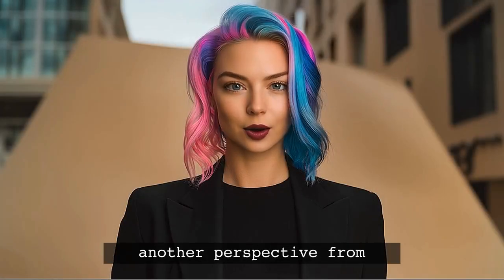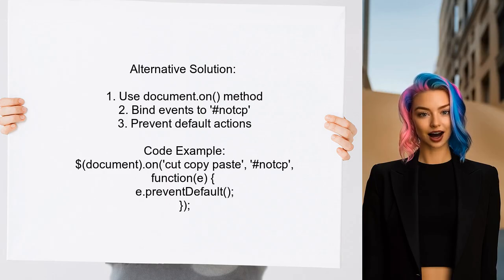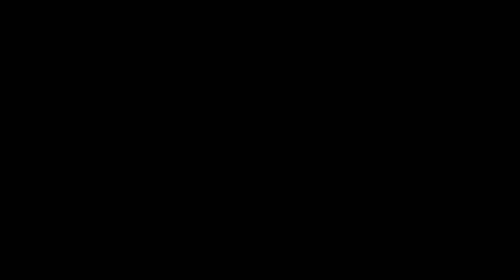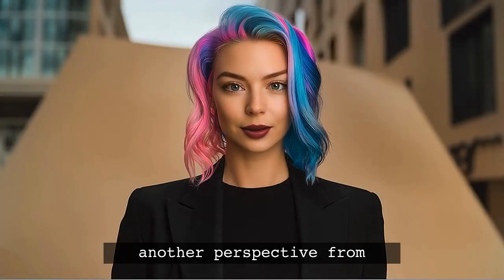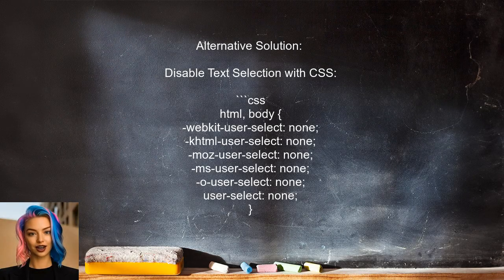Another user suggests a different approach: using the document's on method to bind the cut, copy, and paste events to the element with the ID not-cp. This method prevents the default action for these events. An alternative solution involves disabling text selection using CSS — by adding a few lines of CSS code, you can prevent users from selecting text in specific elements.